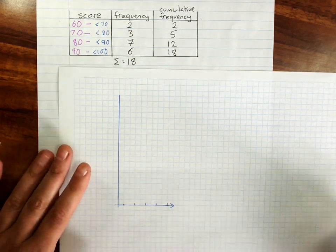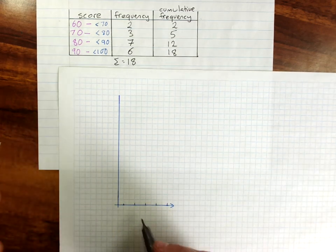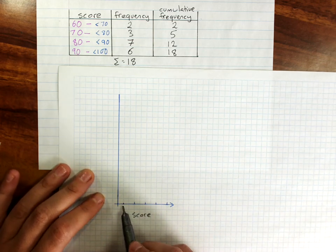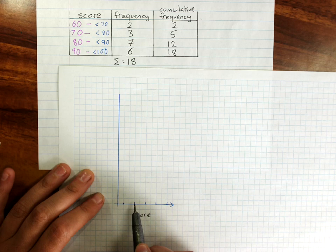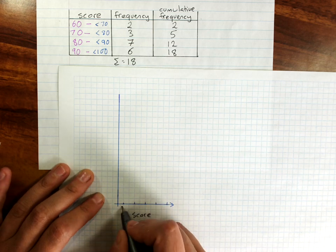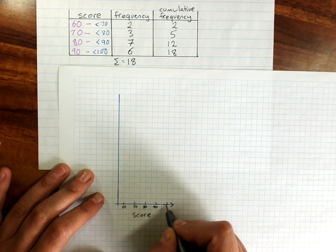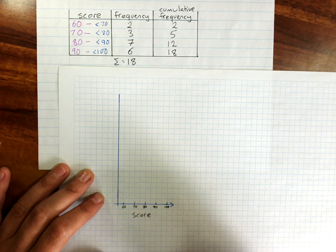So down here, we have our score. And remember, for grouped data, we label the edge of the columns. So that starts at 60, 70, 80, 90, and the final group would end at 100.